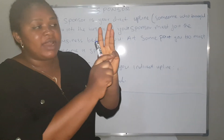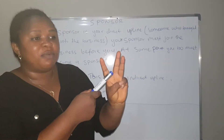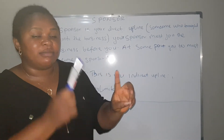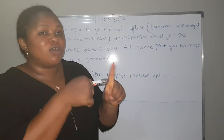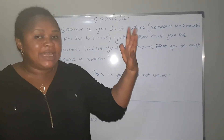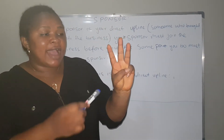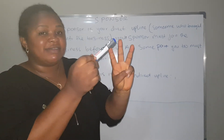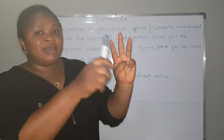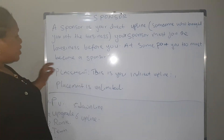Some people make a mistake: when they sponsor their first three and then bring another person, they give that new person to number one to sponsor and still place them under that person. This is very wrong. When it comes to any leadership bonus, that number one you gave the sponsorship to will be the one to earn the leadership bonus. In LongRidge, you can sponsor as many as possible, but you can only place on three legs. So I can sponsor Mr. A, Mr. B, Mr. C, then sponsor Mr. G as the fourth person, but place Mr. D under Mr. A.